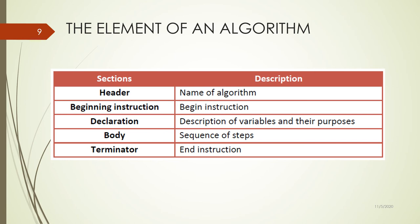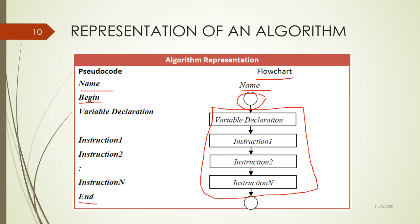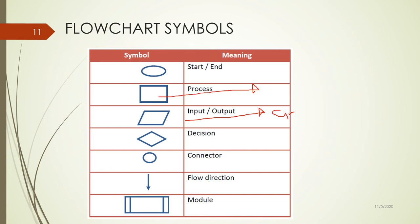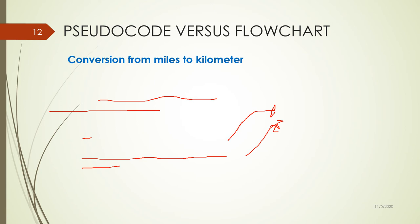The elements of an algorithm: an algorithm must have a name, and it must have sections that indicate the beginning and ending of the instruction. Here is an example of the symbols used in a flowchart — given an example task to convert from miles to kilometers.